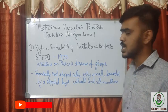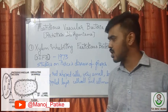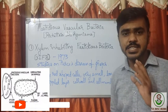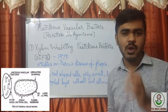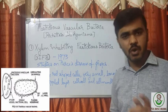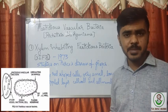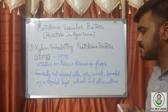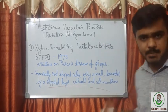The first subgroup is xylem-inhabiting fastidious bacteria, generally called XIFB. This was identified in 1973 during studies on Pierce's disease of grapes. These organisms are generally rod-shaped, very small, and bounded by a rippled layer cell wall and cell membrane.